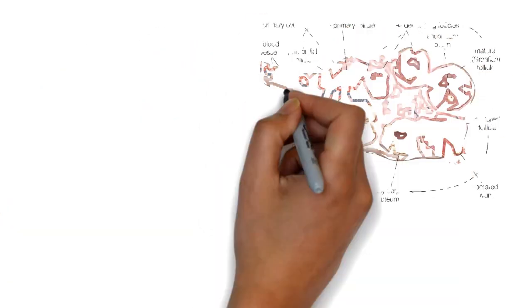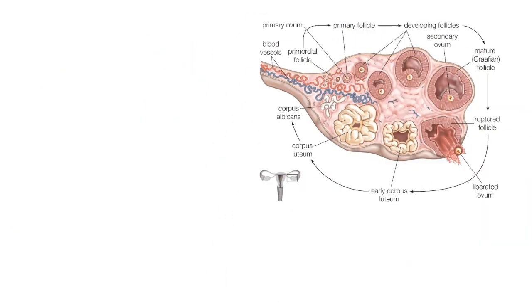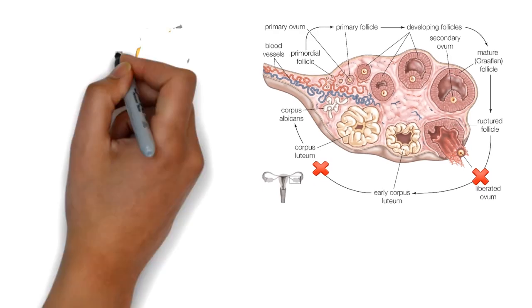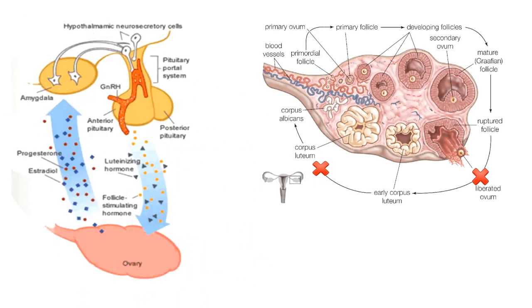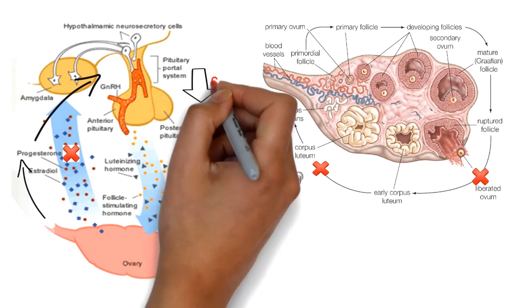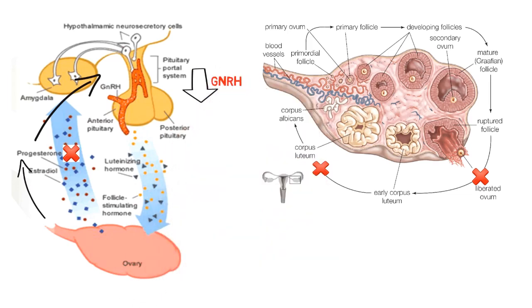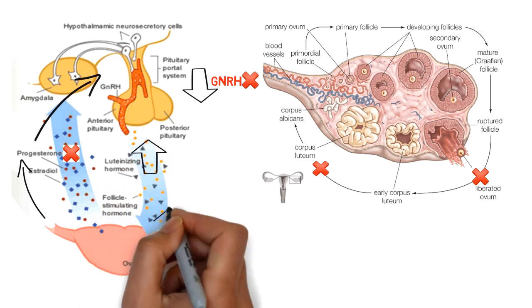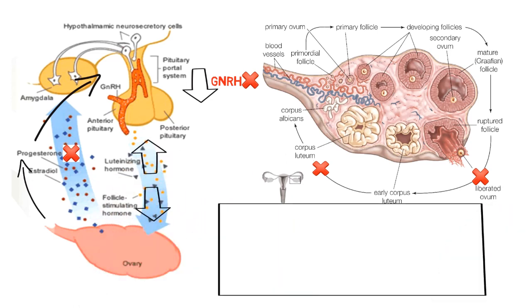In PCOS, during LH surge, there is no liberation of ovum resulting in an anovulatory cycle, thus no formation of corpus luteum. Hence the ovary does not secrete progesterone, which does not decrease the gonadotropic releasing level, thus causing more and more increase in the LH level, which causes increased LH frequency and LH sensitivity and decreased FSH level.